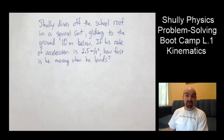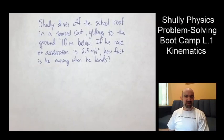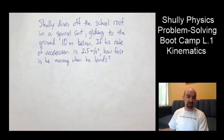This is Shully Physics, Problem Solving Boot Camp Level 1. It might seem like a strange title, but let's just look at this problem I've got here. Shully dives off the school roof in a squirrel suit, gliding to the ground 10 meters below. If his rate of acceleration is 2.5 meters per second squared, how fast is he moving when he lands?